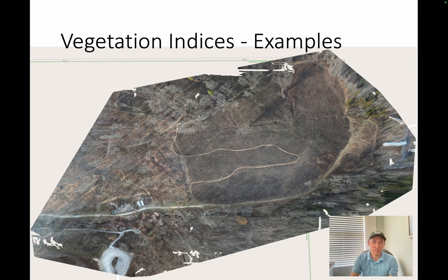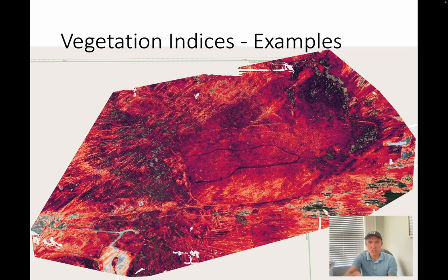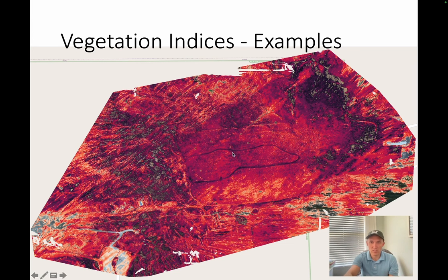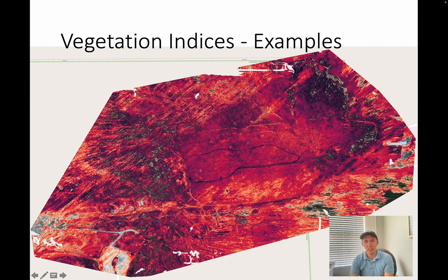VARI is a vegetation index that is minimally sensitive to the atmosphere and uses the three color bands. Here's an example: an optical image of an area with a field and a walking path. If we switch to the VARI version, the path really stands out because it's essentially dirt — not very healthy vegetation. This makes VARI a very good indicator for differentiating between soil or bare ground and healthy vegetation. You can also see a range of vegetation health in the field, which comes out very clearly in the VARI spectral index.